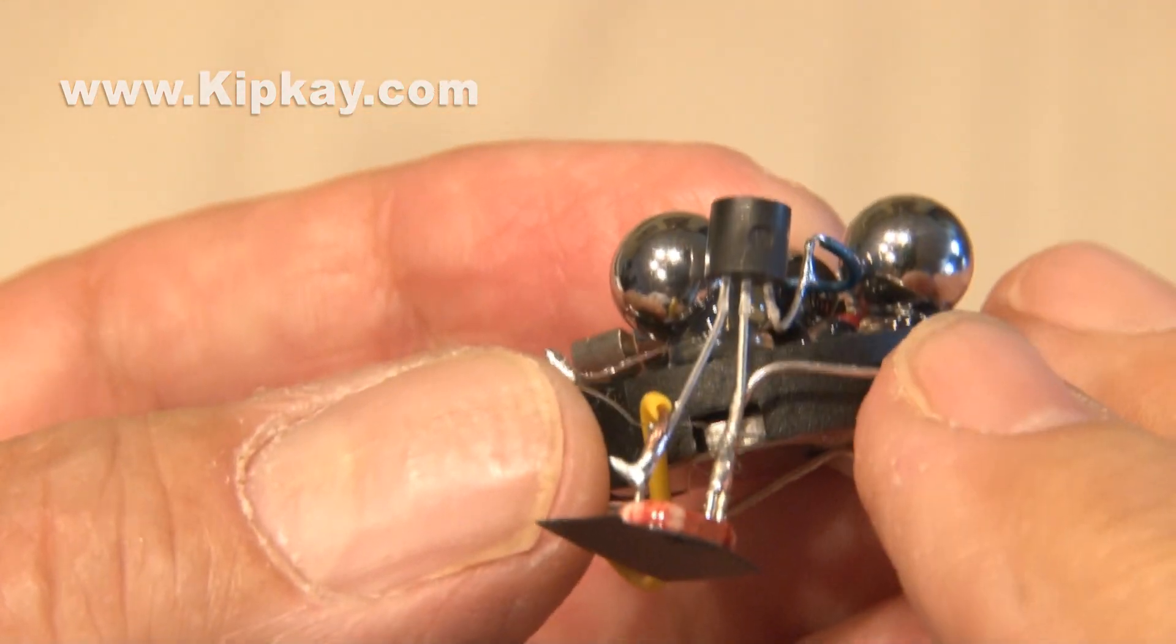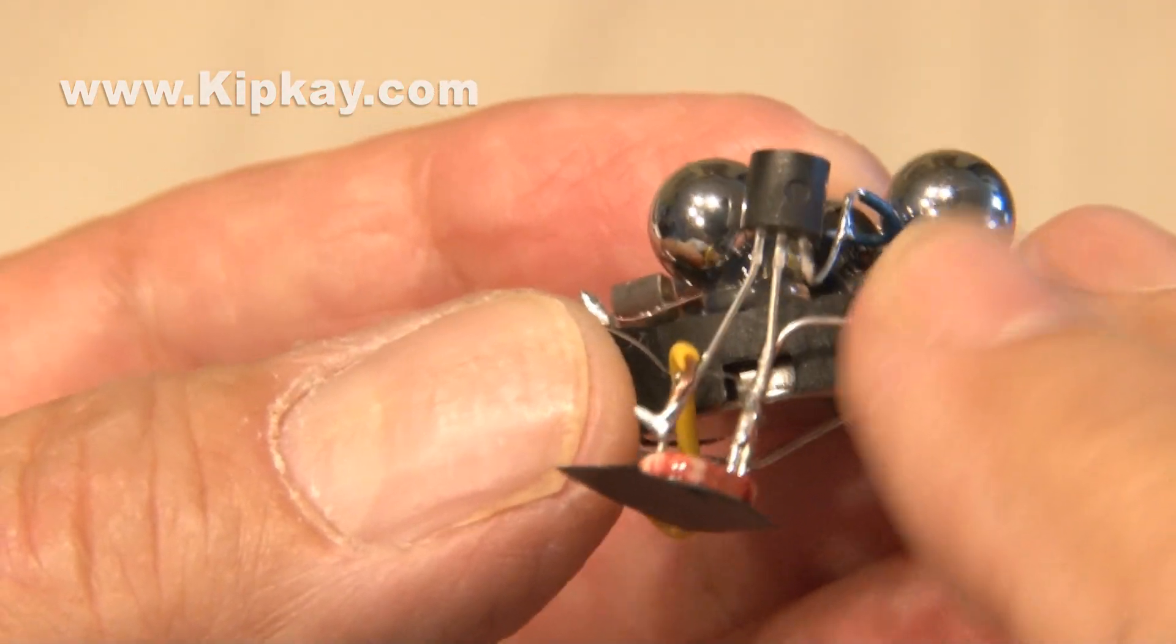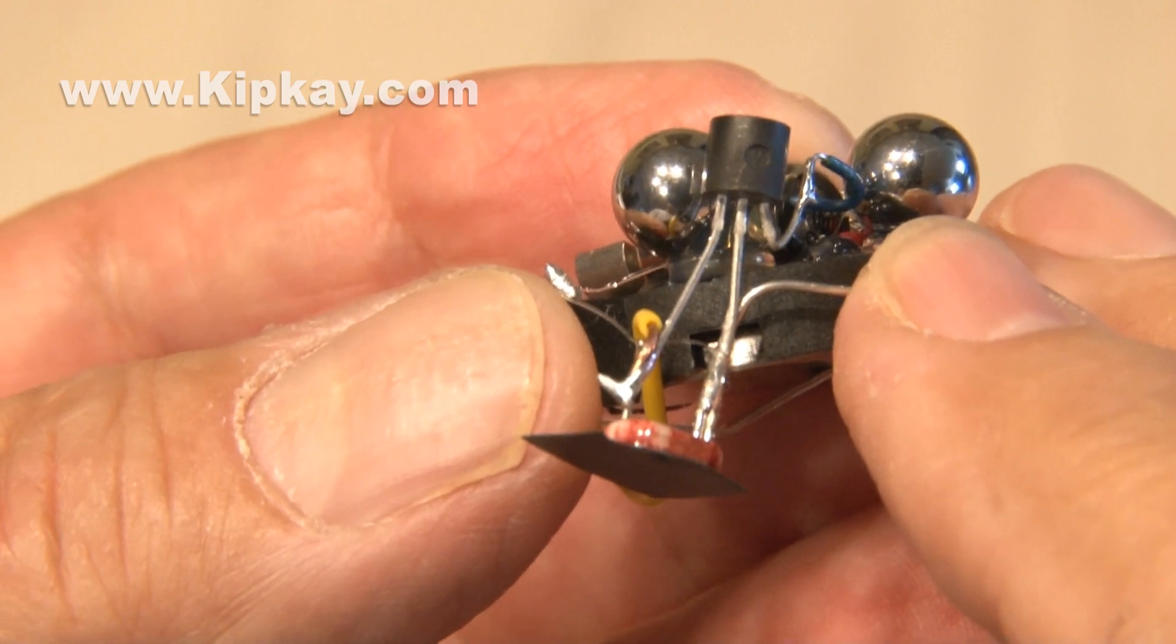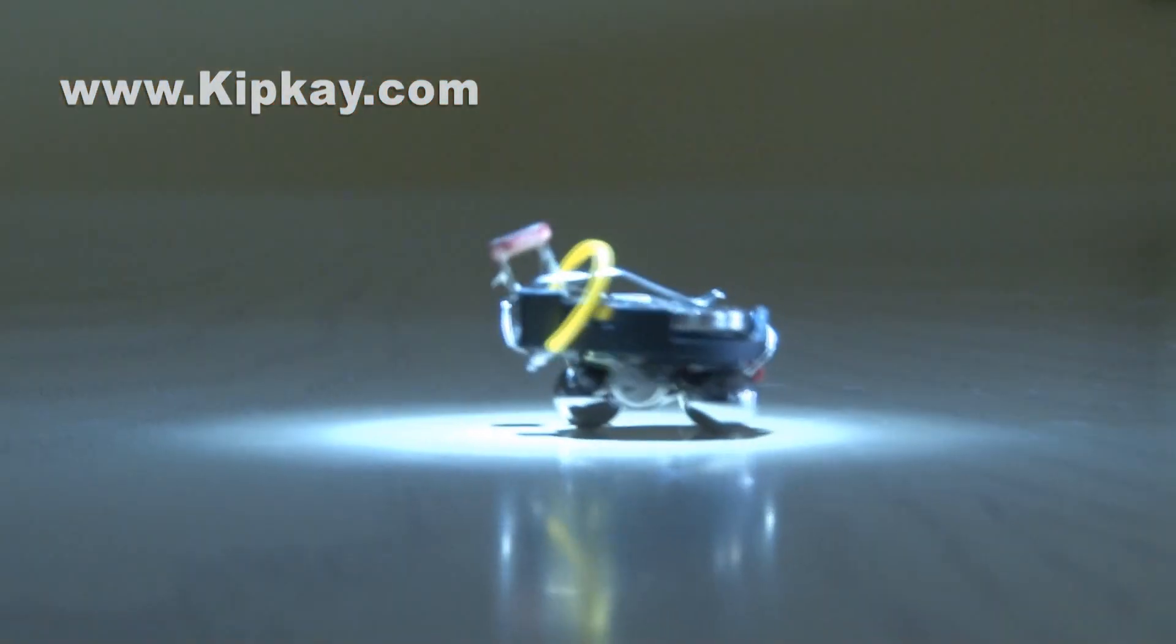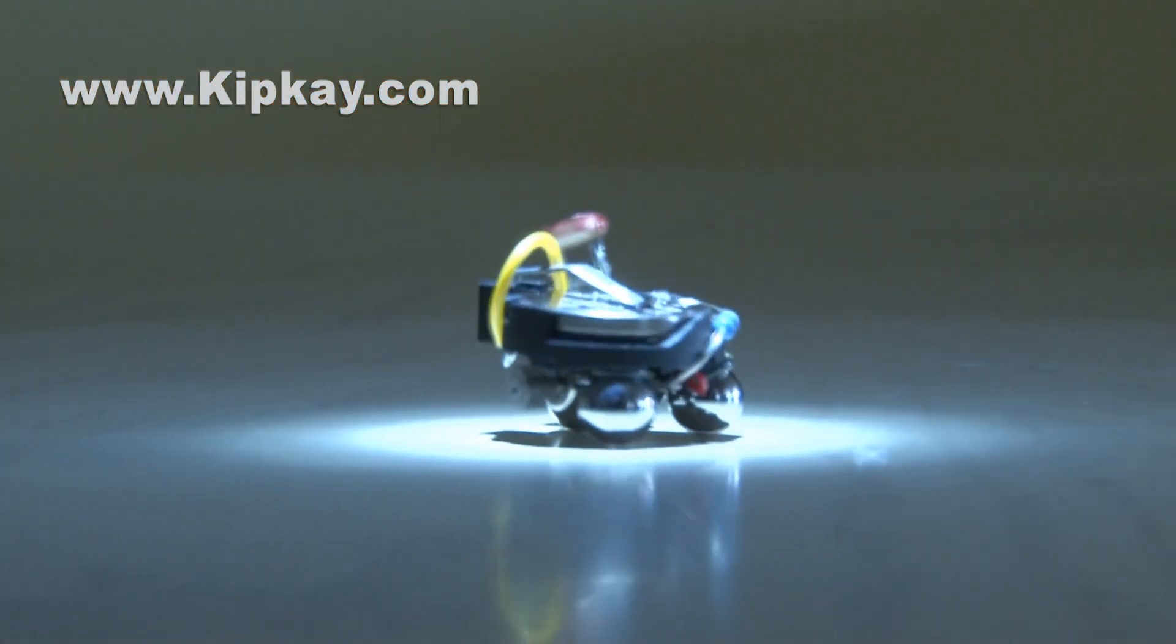You could also reverse a couple of transistor connections and have the jitterbug take off only when it's dark, a little noisy creeper at night. So that's how to make an easy robot, the jitterbug.